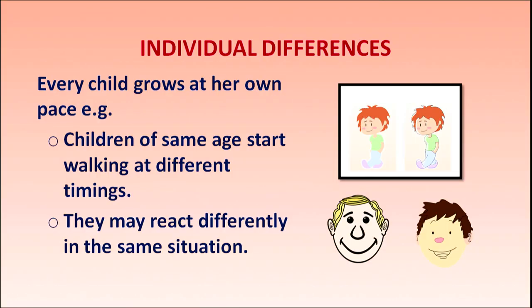Individual differences means every child grows at her own pace. Two children cannot grow at the same speed or height. They may react differently in the same situation — all children cannot smile at the same time or cry at the same situation. We should not compare children or judge them on a single criterion. This is a very important principle of development.